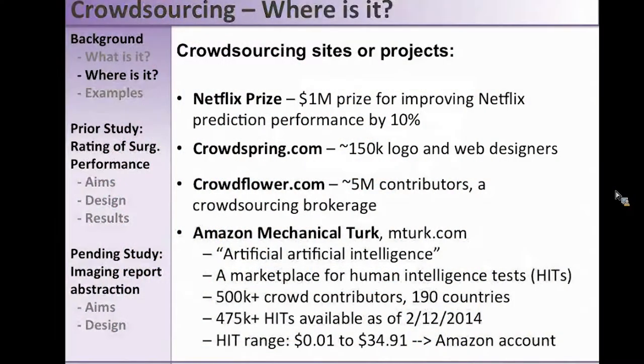Amazon Turk — if you go to mTurk.com you sign up with your Amazon ID. They call it 'artificial artificial intelligence,' which is a cute phrase, but basically it's a marketplace for human intelligence tasks. Currently they list about 500,000 crowd contributors across 190 countries, and as of a couple days ago there were 475,000 HITs available — almost half a million tasks ranging in price from a penny up to about $35, with funds going right into your Amazon account.